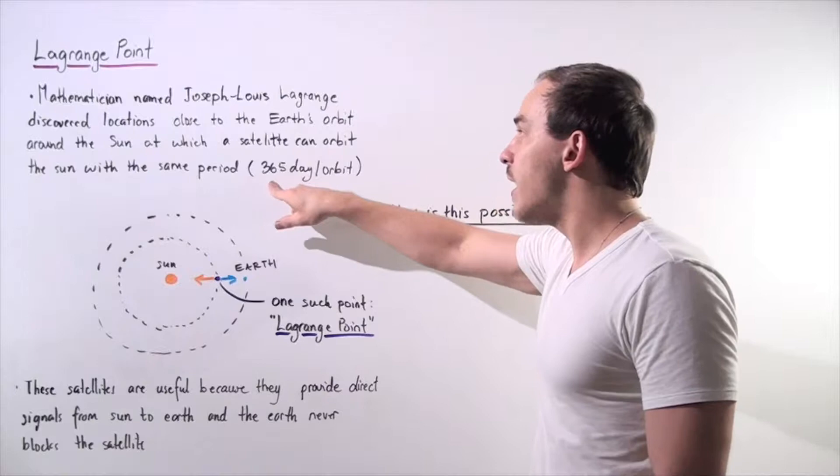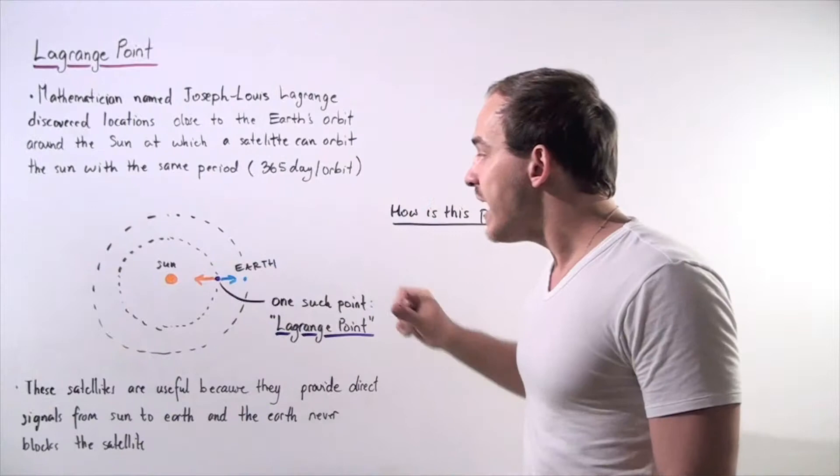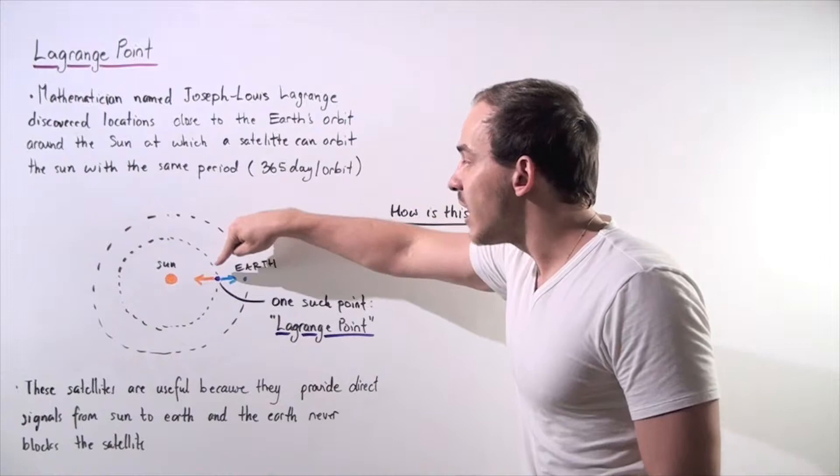So let's look at the following example. We have the sun, we have this specific location known as the Lagrange point where the satellite is placed, and we have the Earth.